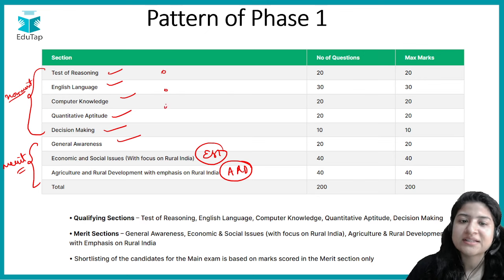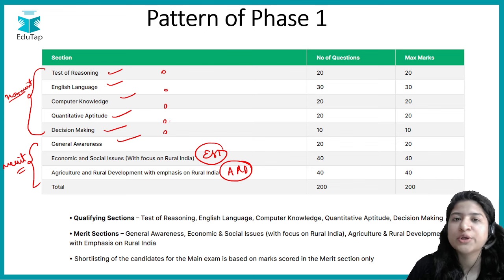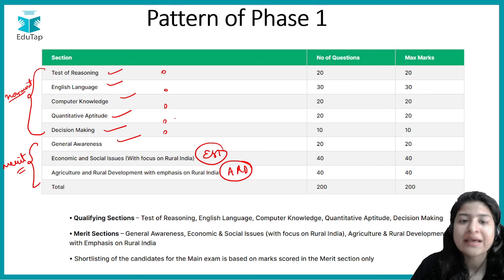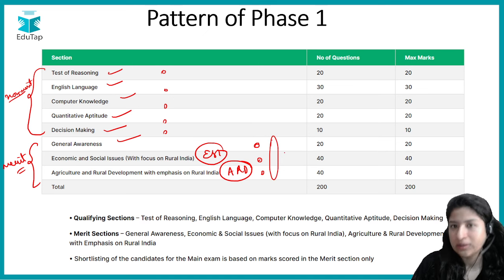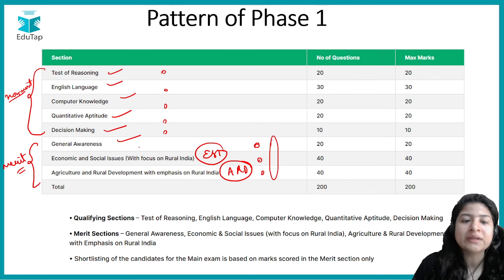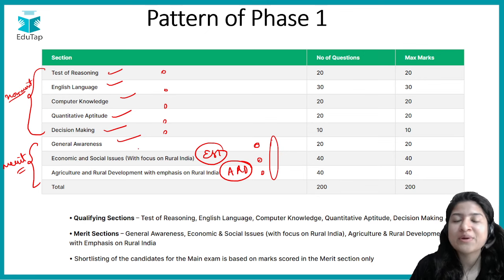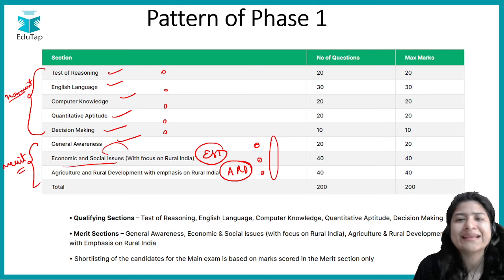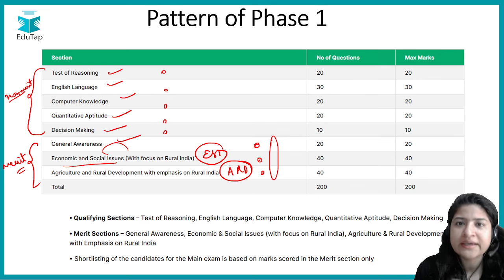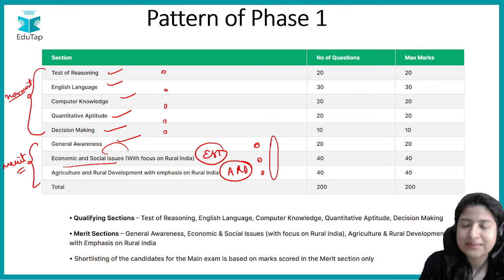In the non-merit section you just have to clear the sectional cutoff — you don't need to score the highest marks as it won't impact your selection. But in the merit section, you have to clear both the sectional cutoff and an overall cutoff. So it's very important to focus on each subject and score as high as possible, which is why today we're looking at ESI — the syllabus, the division of marks between static and current affairs, and the sources to refer to.